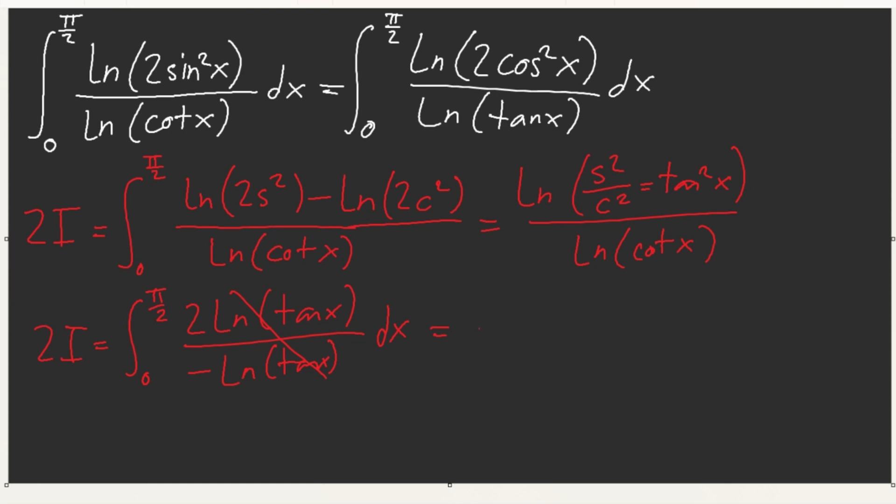So I guess we have negative 2 from zero to pi over 2 dx. And so, let's see. This cancels out. So our integral is negative pi over 2. Okay. So our answer is negative pi over 2.